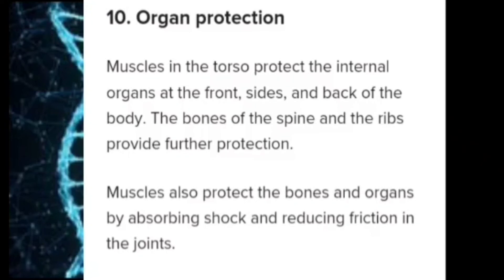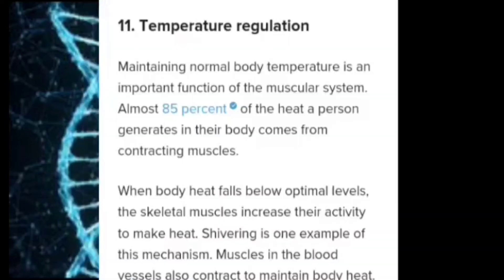Muscles in the torso protect the internal organs at the front, side, and back of the body. The bones of the spine and the ribs provide further protection. Muscles also protect the bones and organs by absorbing shock and reducing friction in the joints. Maintaining normal body temperature is an important function of the muscular system. Almost 85% of the heat a person generates in their body comes from contracting muscles.